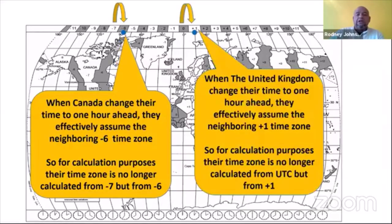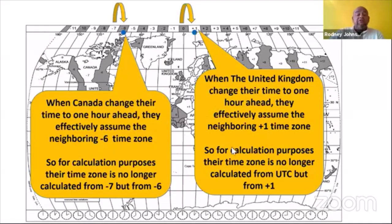Let's look at the United Kingdom. The UK is normally right on the Greenwich Meridian — also referred to as London time. When the United Kingdom practices Daylight Savings Time and moves their clocks one hour ahead, they effectively assume the neighboring plus one time zone. For all calculation purposes, you calculate from plus one instead of the Universal Time Coordinate — but only if the examiner specifically mentions in the question paper that Daylight Savings Time is being used. If they don't mention it, you don't use it.